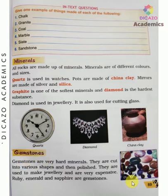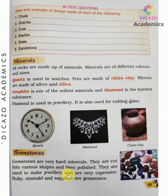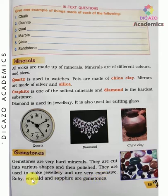Now, gemstones. Gemstones are very hard minerals. They are cut into various shapes and then polished. They are used to make jewelry and are very expensive. Ruby, emerald, and sapphire are examples of gemstones.